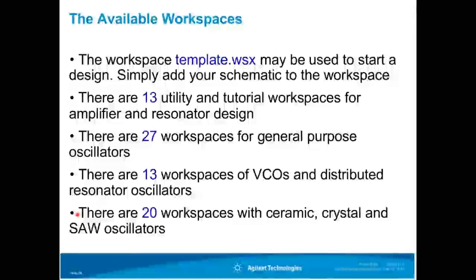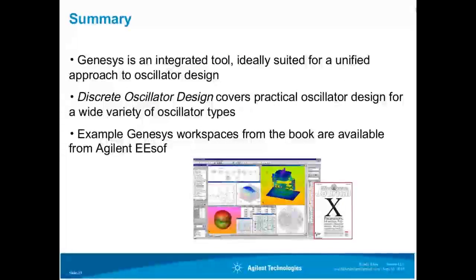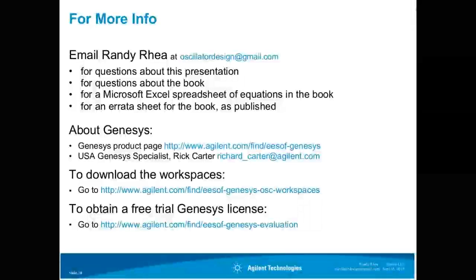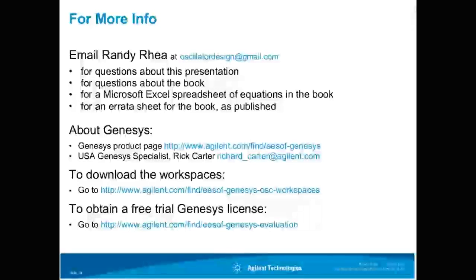The website for downloading these files is given on the last slide. In summary, Genesis is an integrated tool suited for a unified approach to oscillator design. The book covers more detailed information, and example workspaces are available to make getting started easy. I hope you'll stick around for questions and answers. You may contact me to request an Excel spreadsheet with most of the equations in the book. You may also report a RATA or obtain any future RATA sheets that I may publish. If you have questions about Genesis, you can visit the Agilent website or contact your Genesis specialist. The workspaces and a free trial Genesis license are also available at the Agilent website. Thanks for attending.